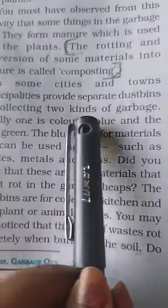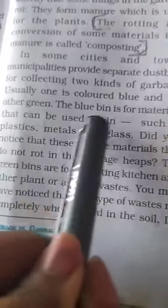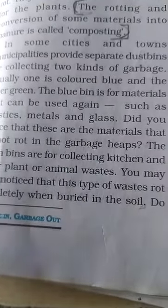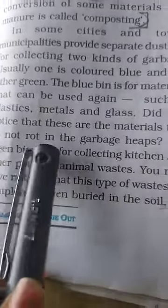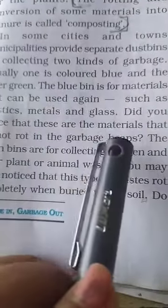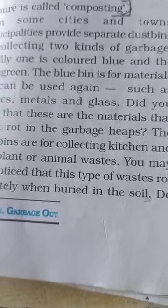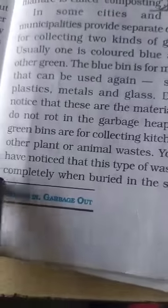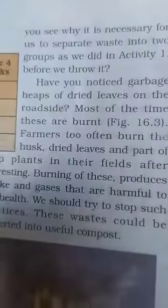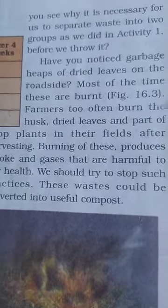In some cities and towns, municipalities provide separate dustbins for collecting two kinds of garbage — blue and green. We put materials that can be reused, like plastic, metal and glass, into the blue dustbin. These are materials that do not rot. The green dustbin is for collecting kitchen and other plant and animal waste, which rots completely when buried in soil. It is necessary for us to separate waste into two groups so we can make manure from one and reuse the other.